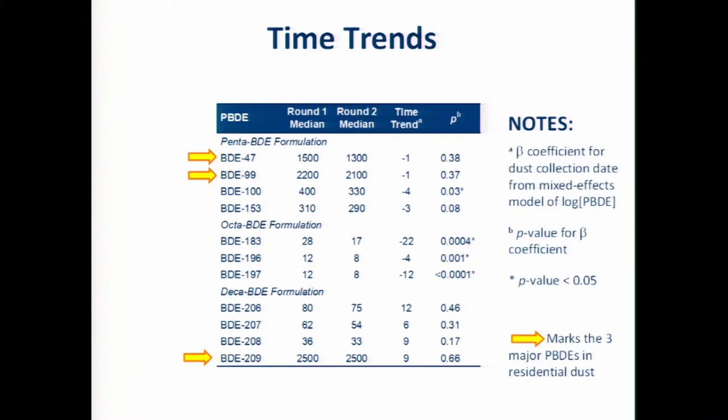The second topic that I want to talk about is the time trends over the course of the study. These PBDEs, some of them have been phased out. BDE-47 and BDE-99, the ones with the arrows at the top there, have both been phased out officially since 2006. And BDE-209 is scheduled to be phased out, but it's still in use in the U.S. So we were hypothesizing that basically the list of PBDEs at the top would be decreasing over time and that the list at the bottom, especially BDE-209, would be increasing over time or at least staying pretty much stable.